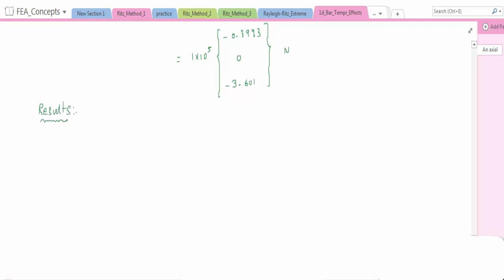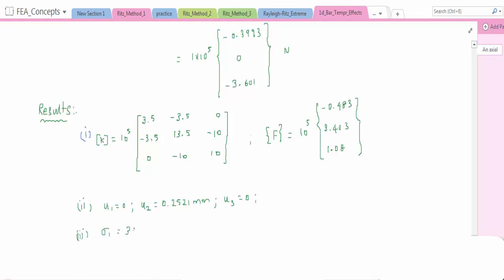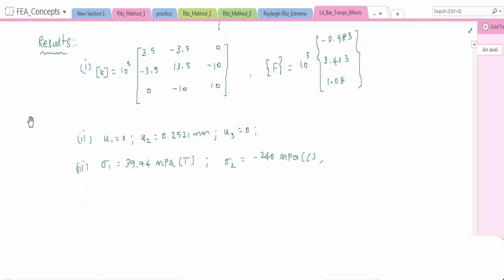After every problem solved, we have to write down the results. After writing these results, we will see the procedure of how we can solve these in ANSYS. So result of K and F have been written. Displacement at node 1 zero, node 2 0.2521 millimeter, and node 3 zero. Similarly for stresses: 39.94 megapascal tensile, -240 megapascal compression. And the reaction forces: R1 -0.3993 x 10^5 Newton, R2 logically it should be zero, R3 is equal to -3.601 x 10^5 Newton.